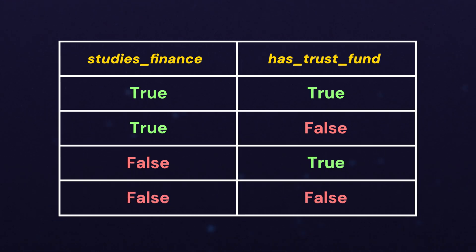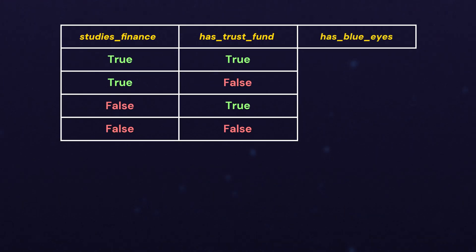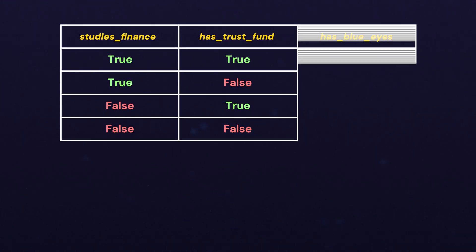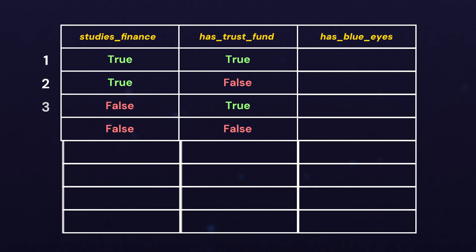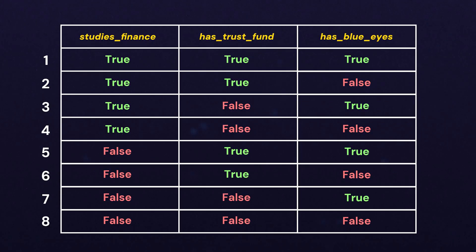But what happens if we add a third field? Well, if it's also a Boolean, then the number of possibilities actually jumps up to eight, because we have to multiply four by the available combinations again, which is two, getting eight possible total combinations.